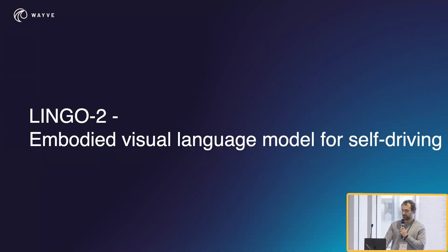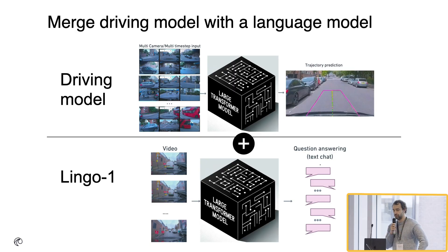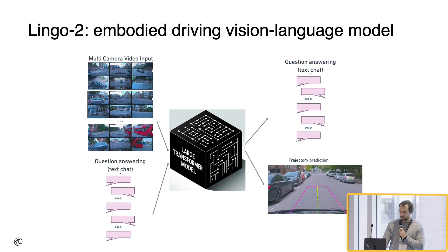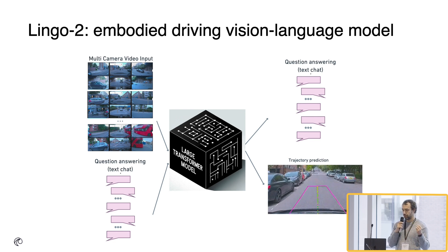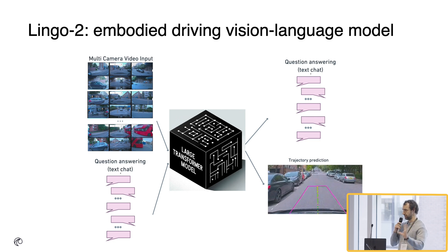Hence we went on yet another journey: the next iteration of the system, which is Lingo 2, an embodied visual language model. The idea is to merge together a driving model — the main competency of the company — and Lingo 1 that can explain things, and make it the same model that can take in video, take in chat from the user, and then produce not only explanations and the ability to chat with the user, but also a trajectory prediction such that it itself can drive and explain its own decisions — all in the same network with the same weights.